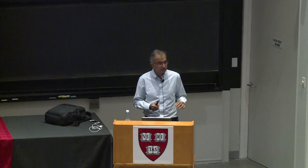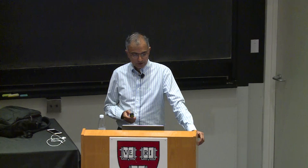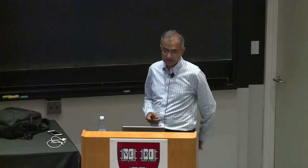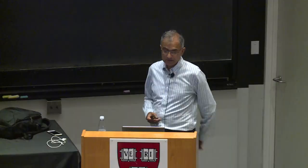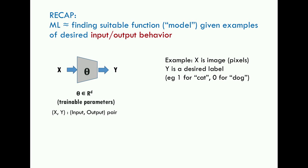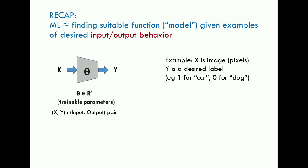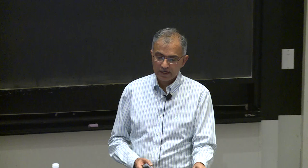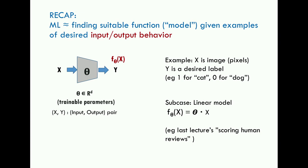For many applications it doesn't really matter what's inside the model, but today we'll open it up and look at deep learning. The model has desired input-output behavior: x should map to y, given examples of x and y. For instance, x could be an image pixel vector and y a label like dog or cat. In a linear model, the output is the inner product of theta and x — theta is a vector and the inner product with x is a scalar.